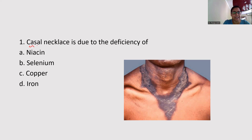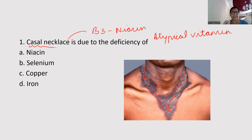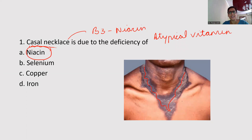Always remember, Casal's necklace is actually due to the deficiency of B3. B3 is niacin, and it is known as an atypical vitamin. In this condition, there is dryness of the skin which gives the appearance of a necklace — that is Casal's necklace. Let's study more about niacin because so many questions have been framed on this topic so far.